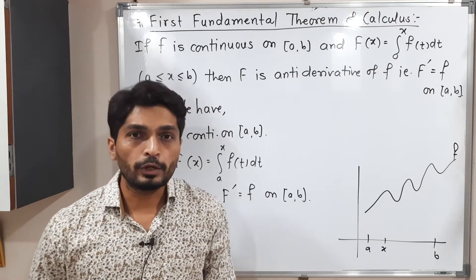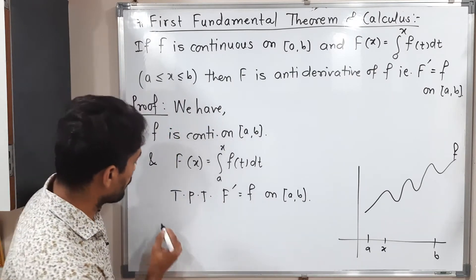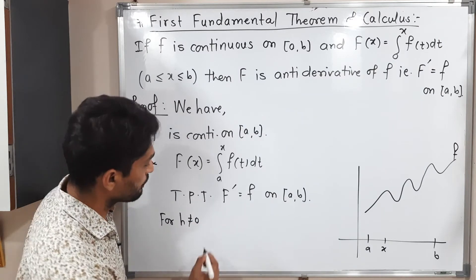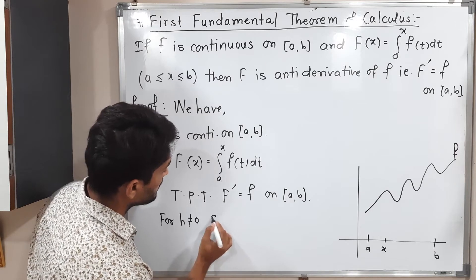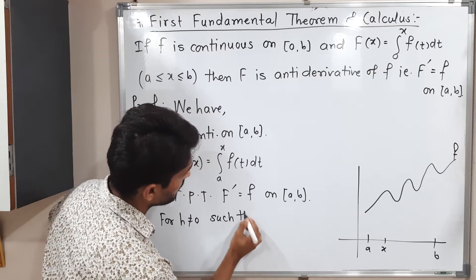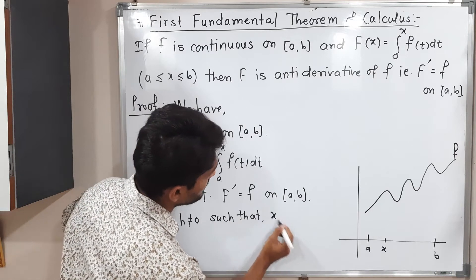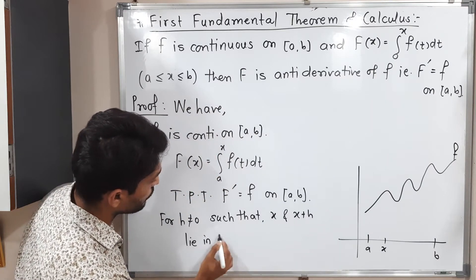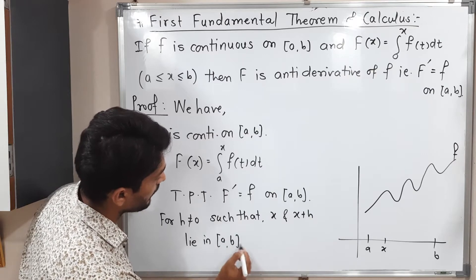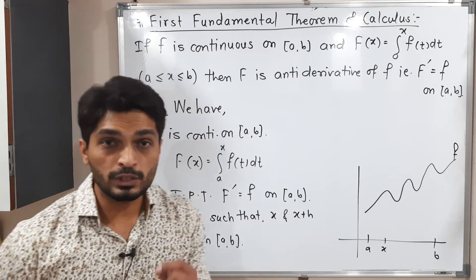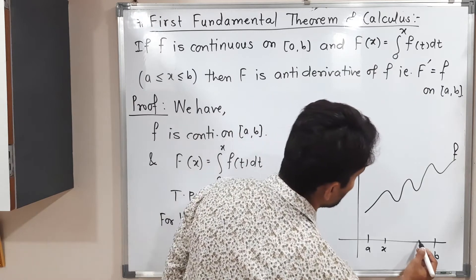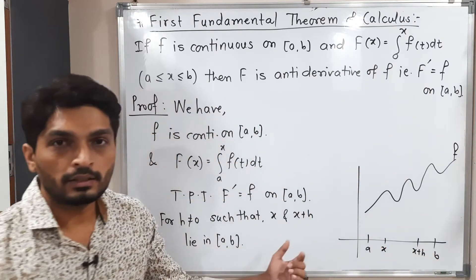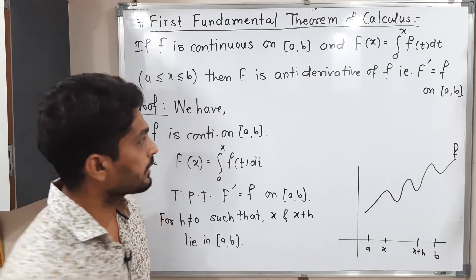To begin the proof, we take some h, where h ≠ 0, such that both x and x + h lie in the closed interval [a, b]. So we are selecting a non-zero h such that both x and x + h belong to [a, b].